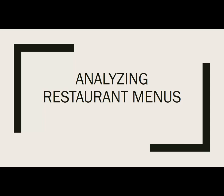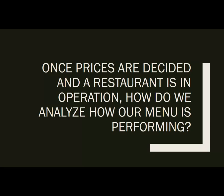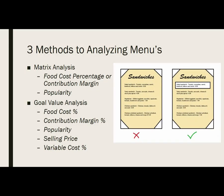Welcome to your presentation on analyzing restaurant menus. Once prices are decided in a restaurant, how can we go about analyzing how our menus are actually performing? There are really three key methods that can be used. The first two are within matrix analyses — one where you compare your food cost percentage and your popularity for all items to a weighted average, or you can use your contribution margin, which is your profitability, compared to popularity.